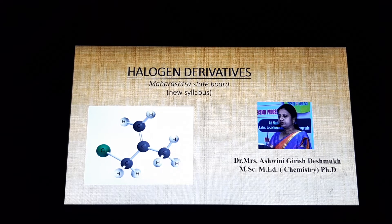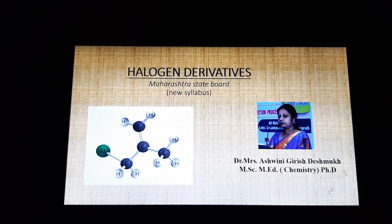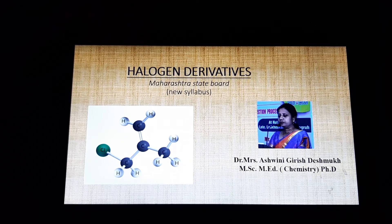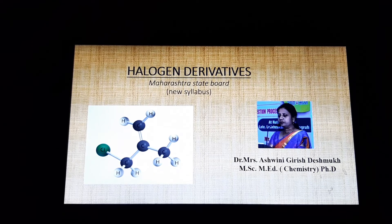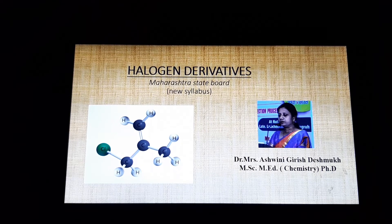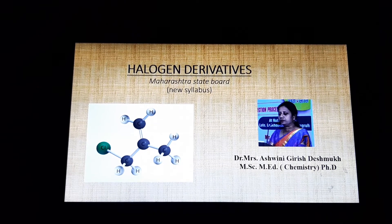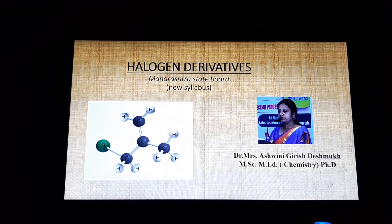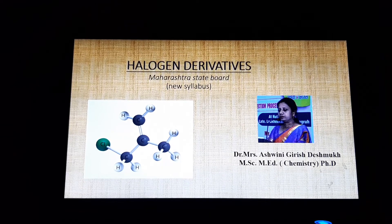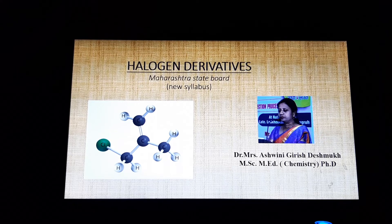Organic chemistry is a branch of chemistry that deals with the study of carbon compounds. The parent family of these compounds is hydrocarbon. Hydrocarbon is a compound containing only carbon and hydrogen atoms. There are two types of hydrocarbon: saturated hydrocarbon and unsaturated hydrocarbon. In saturated hydrocarbon, the valences of carbon atoms are fully satisfied, while in unsaturated hydrocarbon, the valences of carbon atoms are not fully satisfied.